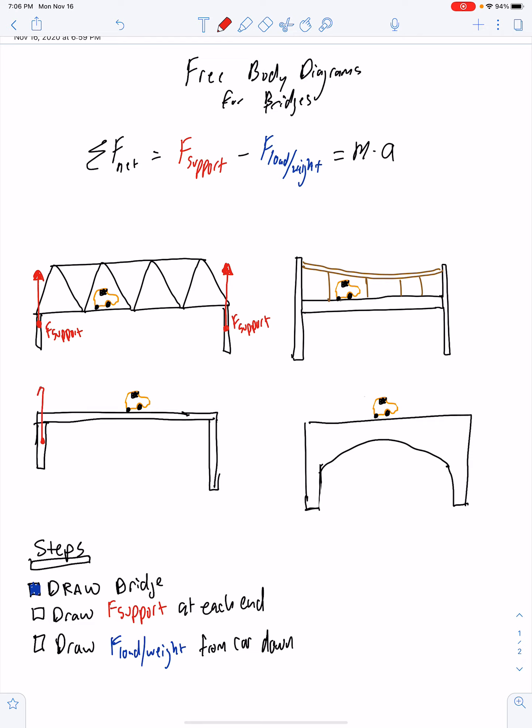And so on your drawing, all you should have at this point is your representation of your bridge. It doesn't need to be perfect. You have a little car, and then you have labeled your support forces at the very ends of your bridge.